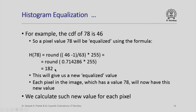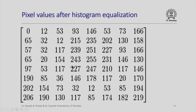Look how interesting this is. We do not know how the formula came by, but we can implement it into an equation and calculate the new value. This gives us an equalized value. Each pixel in the image will have to be transformed in this fashion. Each pixel which has a value 78 will now have a value 182, and we can calculate such new values for each pixel in the image. If we do that, we will get the new pixel values after histogram equalization.